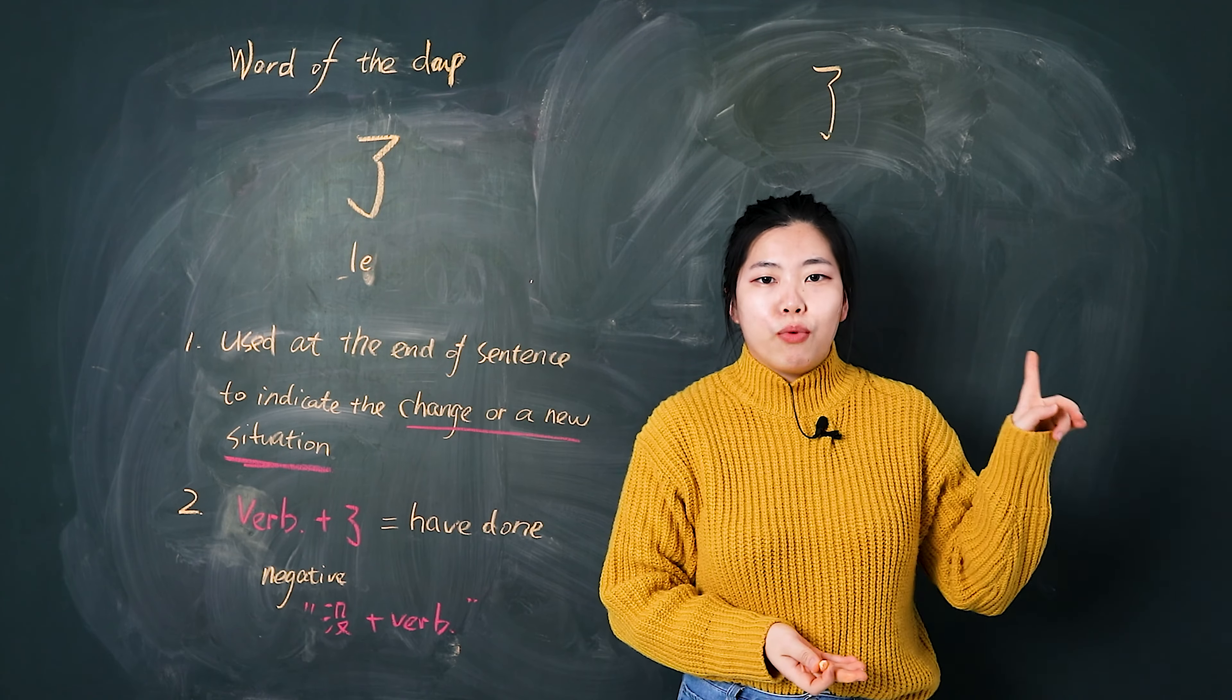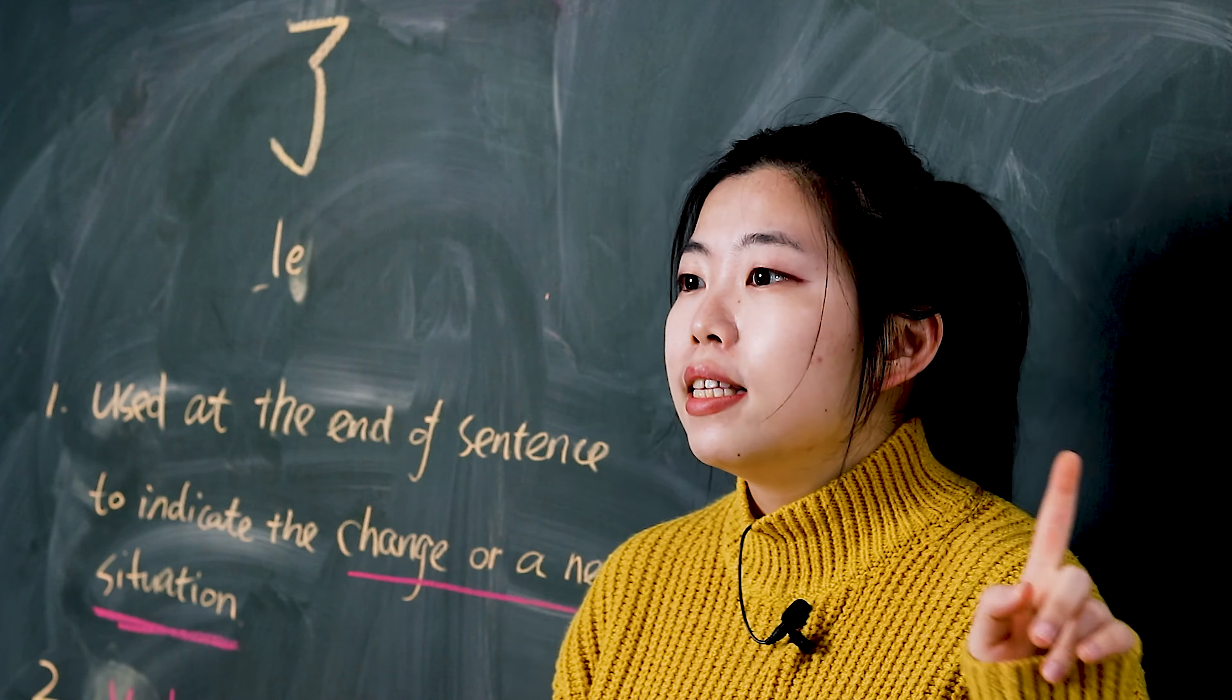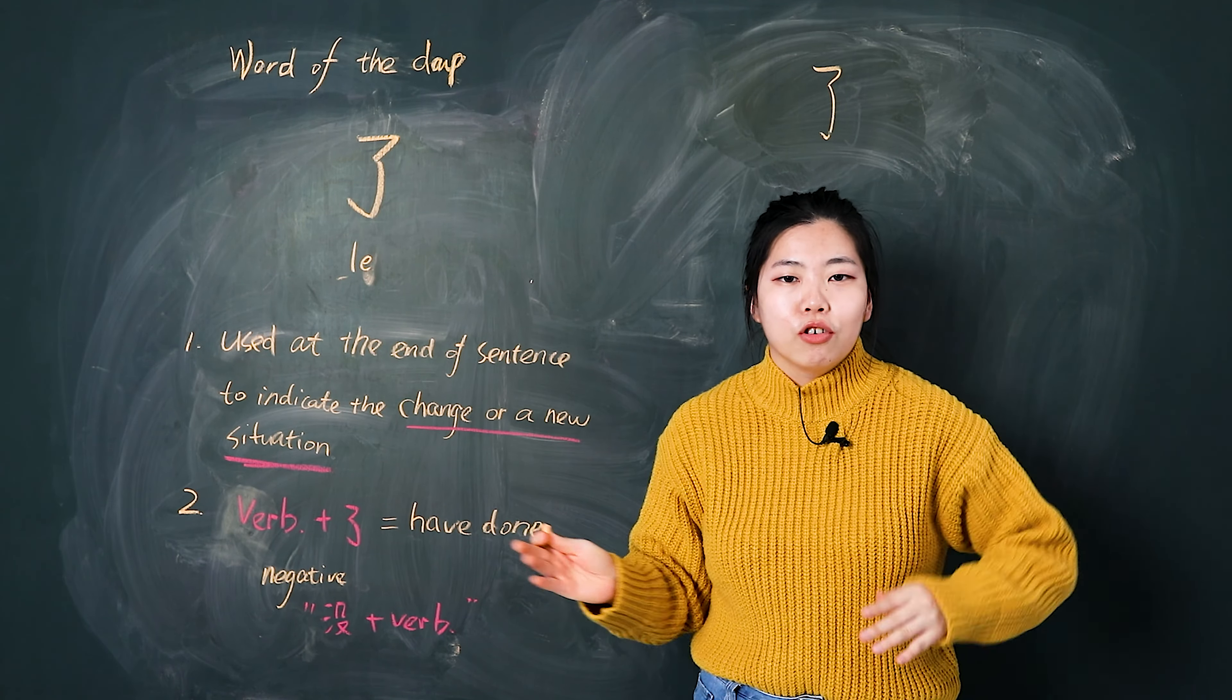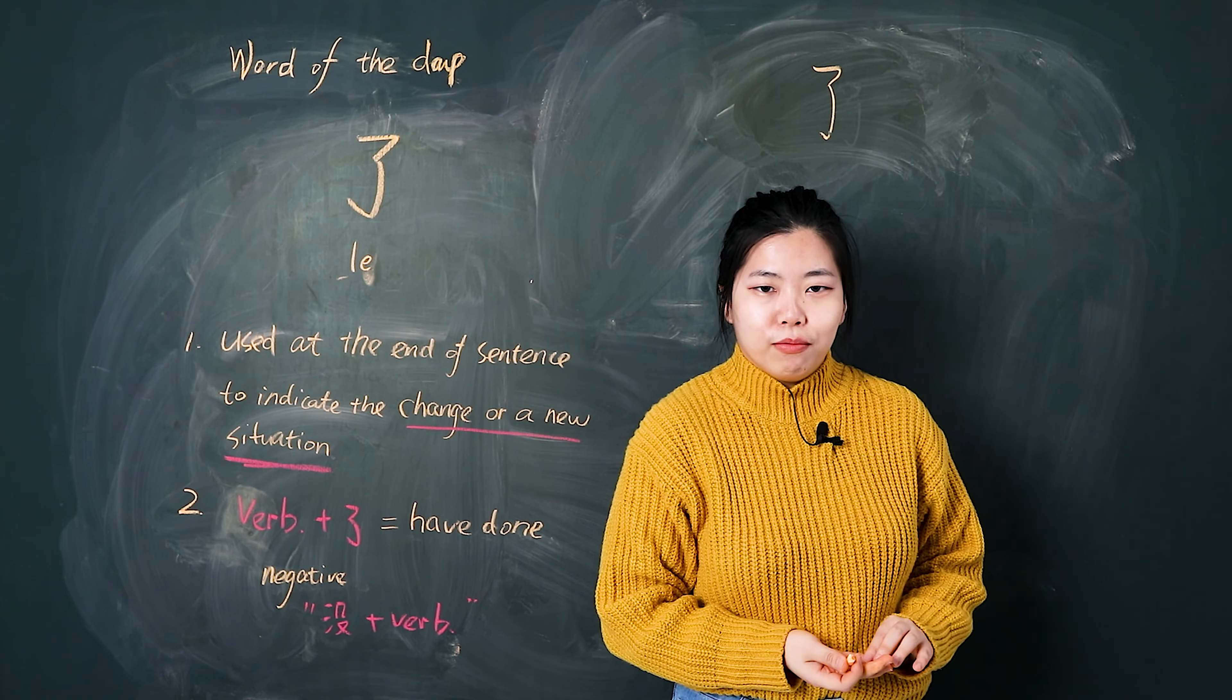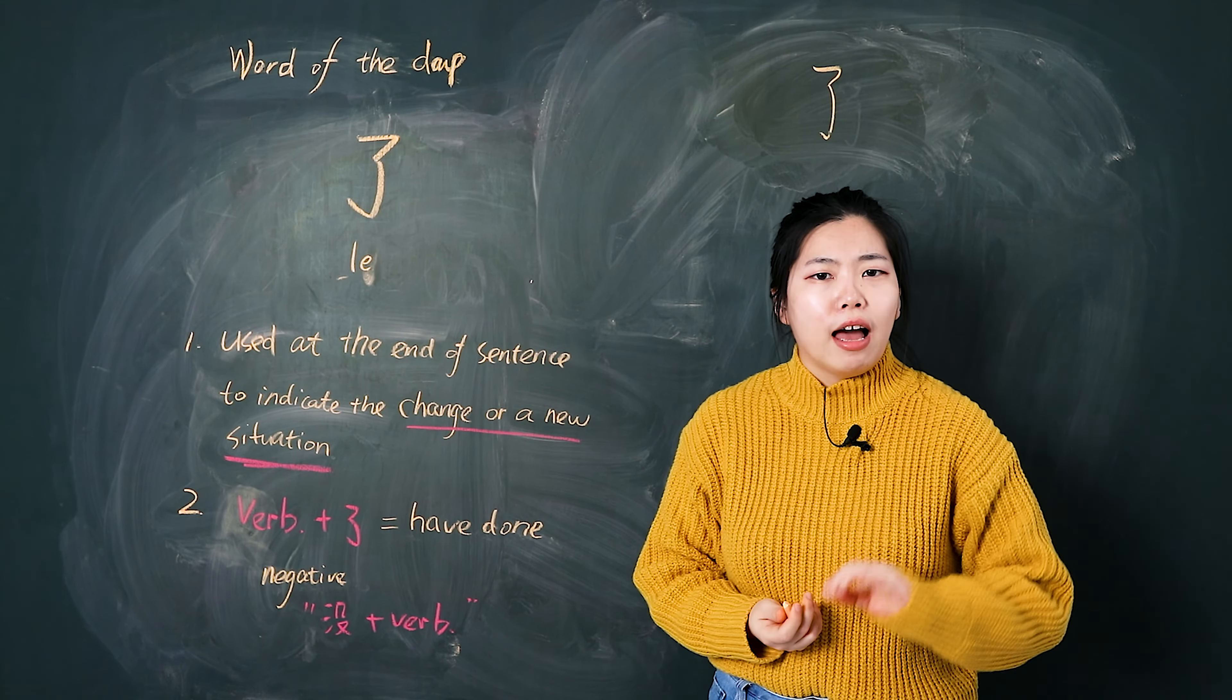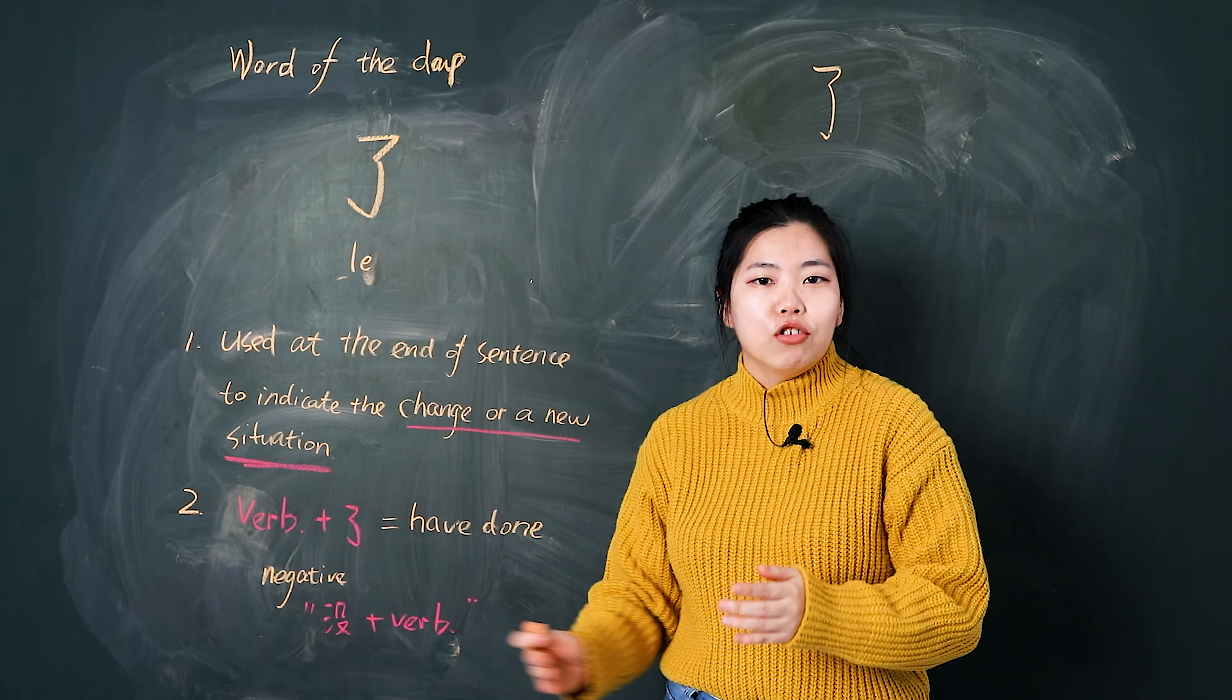Or you can say yesterday is a raining day. 昨天下雨了. 昨天下雨了. This situation, just a new situation coming. Or I can say, for example, I'm 30 years old now. 我三十岁了. Before I say this sentence, I'm not 30 years old, so now it's a situation change.